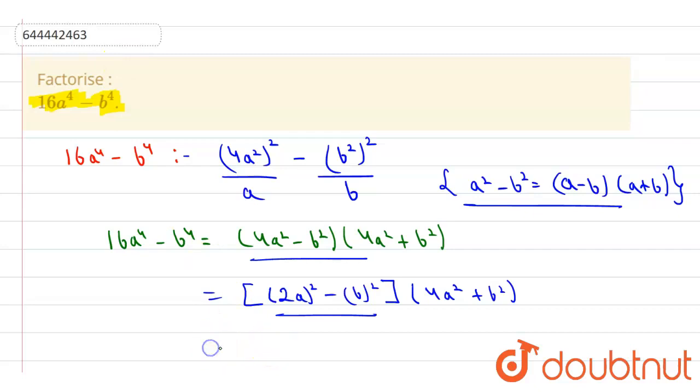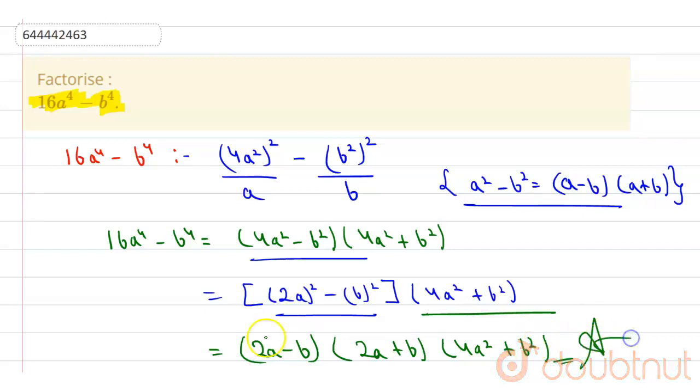So now we can write here (2a - b)(2a + b). This is the same, so (4a² + b²). This is our required answer.